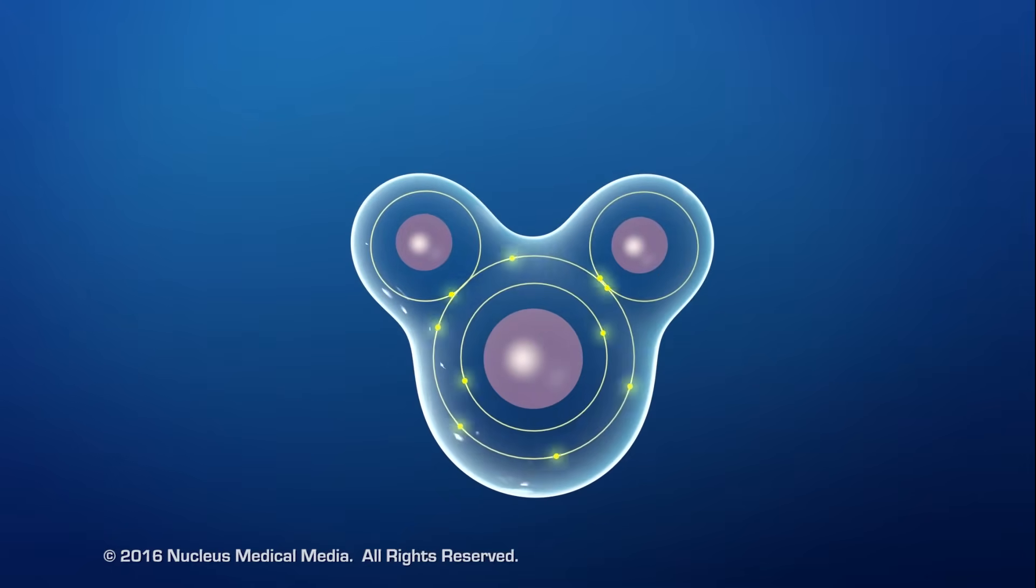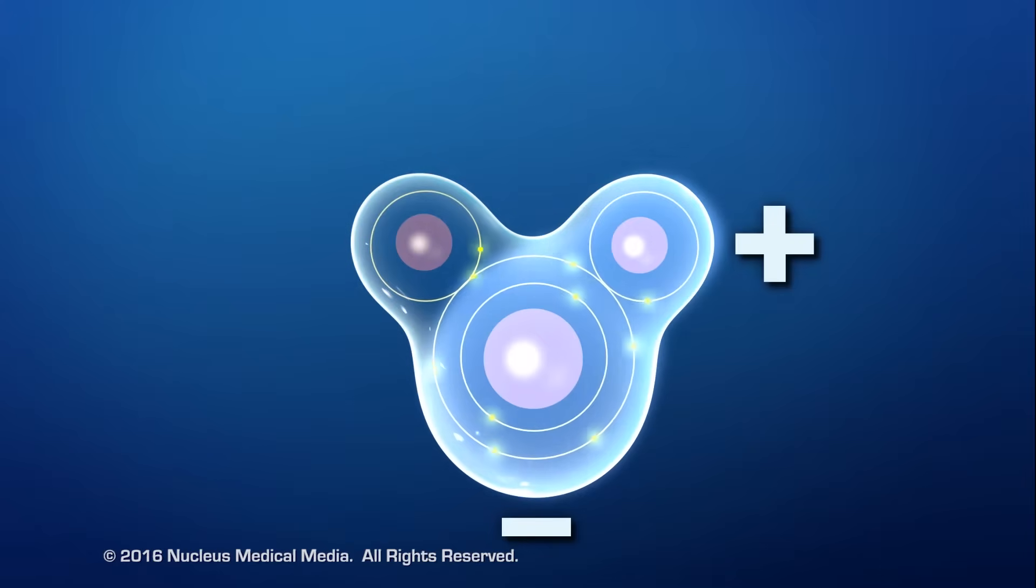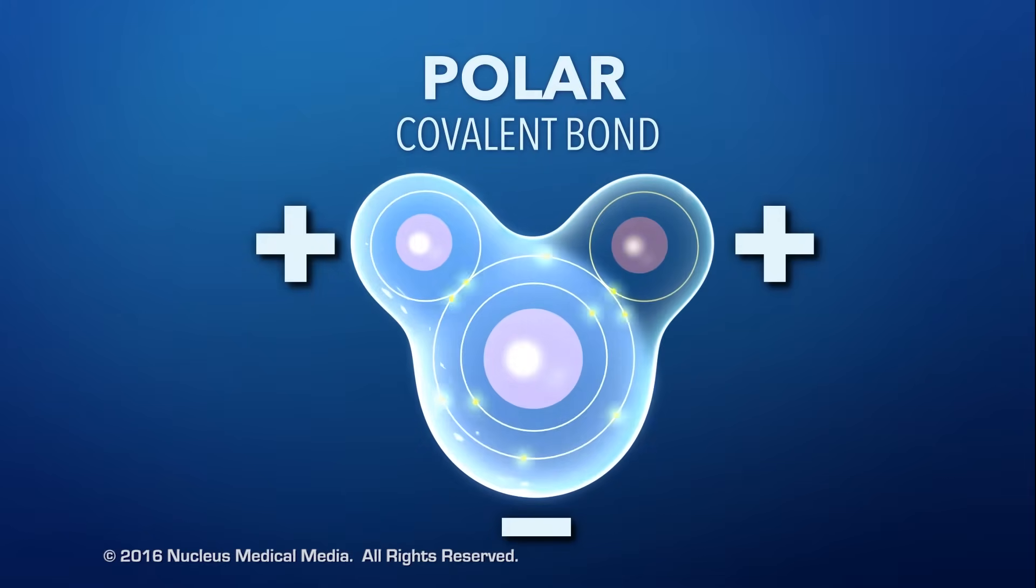This unequal sharing of electrons creates opposing poles of electrical charge on either side of the two bonds that hold the atoms together. Because of the opposite poles, these bonds are called polar covalent bonds.